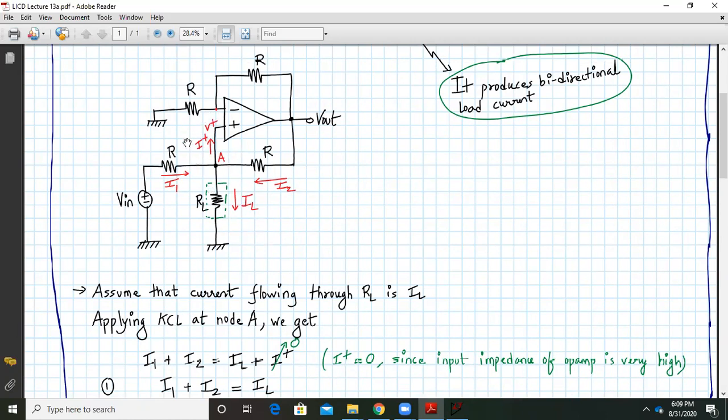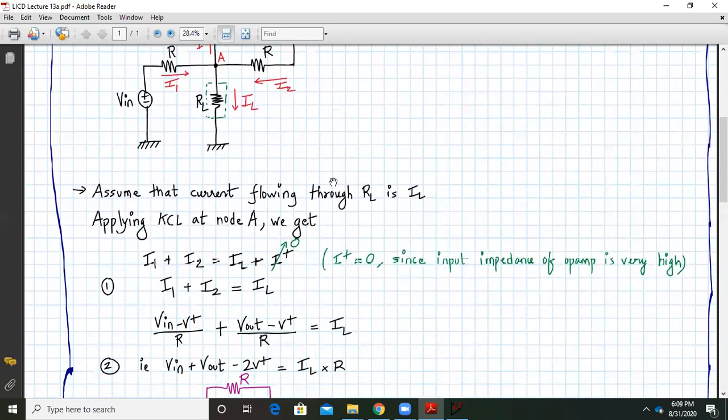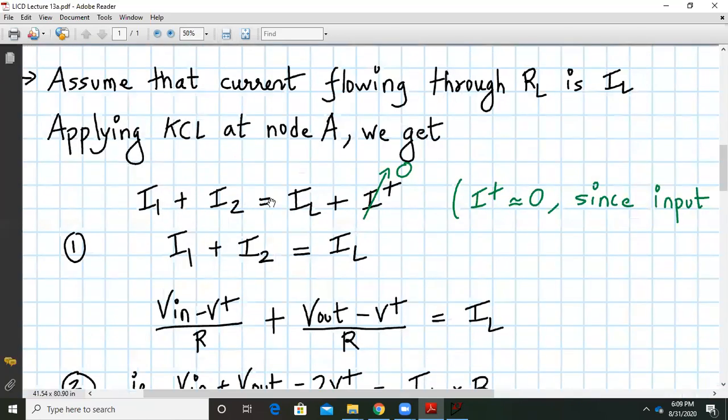As we know I plus is approximately equal to zero because of high input impedance of op-amp and hence we can write it this way that I1 plus I2 is equal to IL plus I plus and I plus is equal to zero. So I1 plus I2 will be equal to IL.